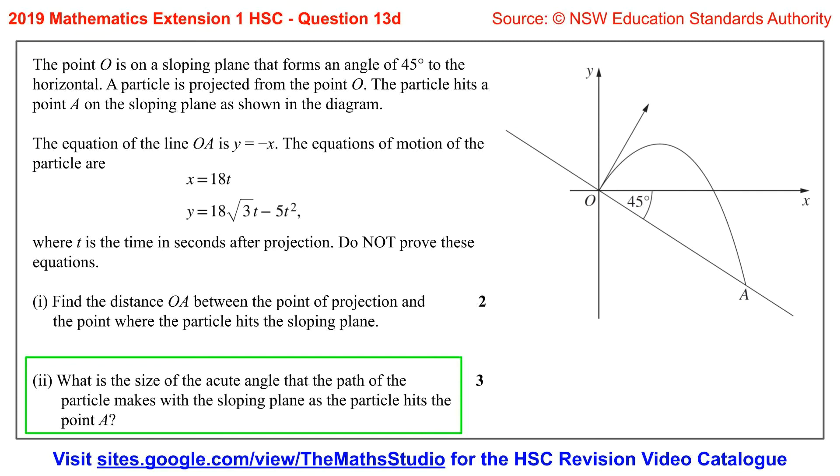Part two. What is the size of the acute angle that the path of the particle makes with the sloping plane as the particle hits the point A?